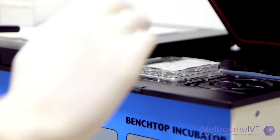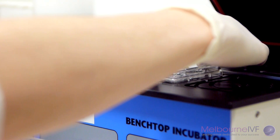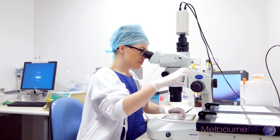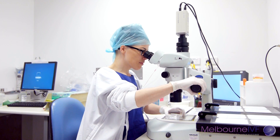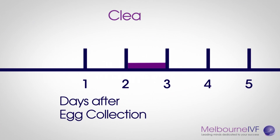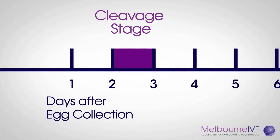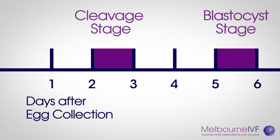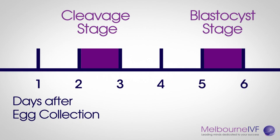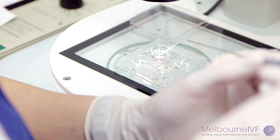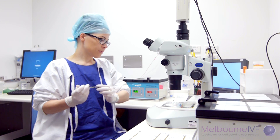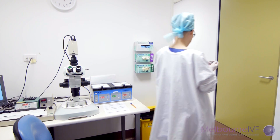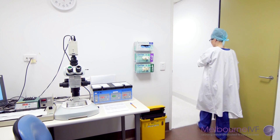Embryo transfer. Once the embryos have developed and the embryo with the highest chance of pregnancy success has been chosen, the embryo transfer procedure takes place. A cleavage stage embryo will be transferred two to three days after egg collection. A blastocyst stage embryo will be transferred five to six days after egg collection. The embryologist prepares the embryo ready for transfer and, together with your fertility specialist, is happy to answer any questions you may have.